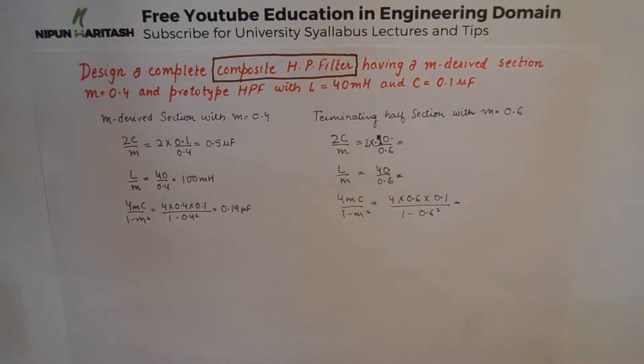We can design this by using an M derived section of 0.4 and a prototype high pass filter section with L equal to 40 millihenry and C equal to 0.1 microfarad. This is how a question would look like, but before we dive into the question...